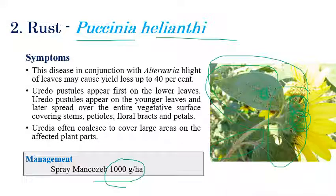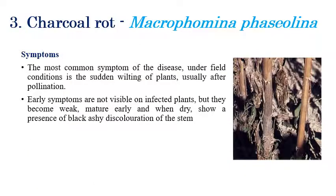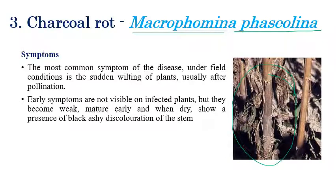For management of rust, spraying Mancozeb at the rate of one kilogram per hectare is recommended. Moving to charcoal rot, caused by Macrophomina fasciolina, the most common symptom is sudden wilting of plants.